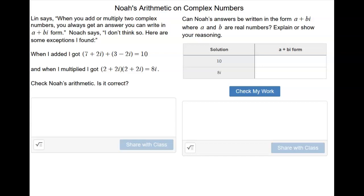Question 3. Lynn says when you add or multiply two complex numbers, you always get an answer you can write in a plus bi form. Noah says, I don't think so. Here are some exceptions I found.